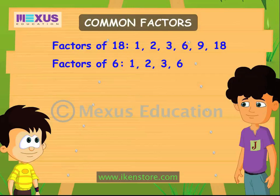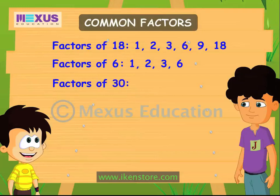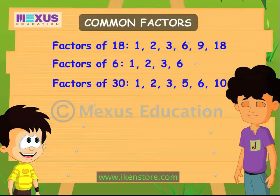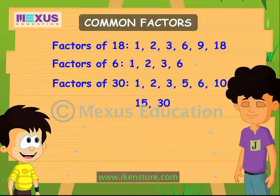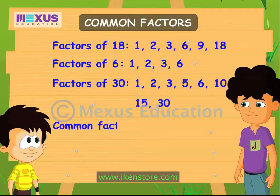And how about 30? The factors of 30 are 1, 2, 3, 5, 6, 10, 15, and 30. 1, 2, 3, and 6 are factors of all three numbers. Yes, they are. And they are known as the common factors of the three numbers.